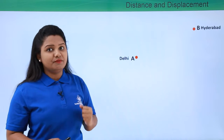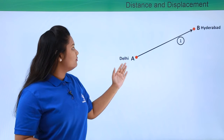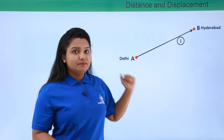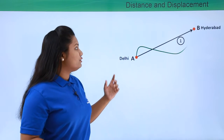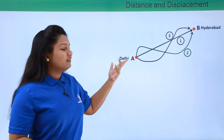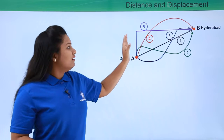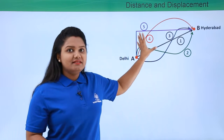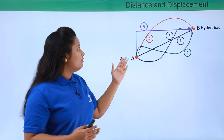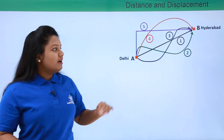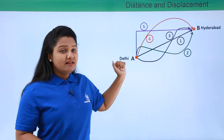For example, one path may go straight away which connects point A to point B — that is path number one. There are so many other paths like path number two, path number three, path number four and five. Here I have shown only five paths, but there are many other paths that I can take in order to reach Hyderabad from Delhi.